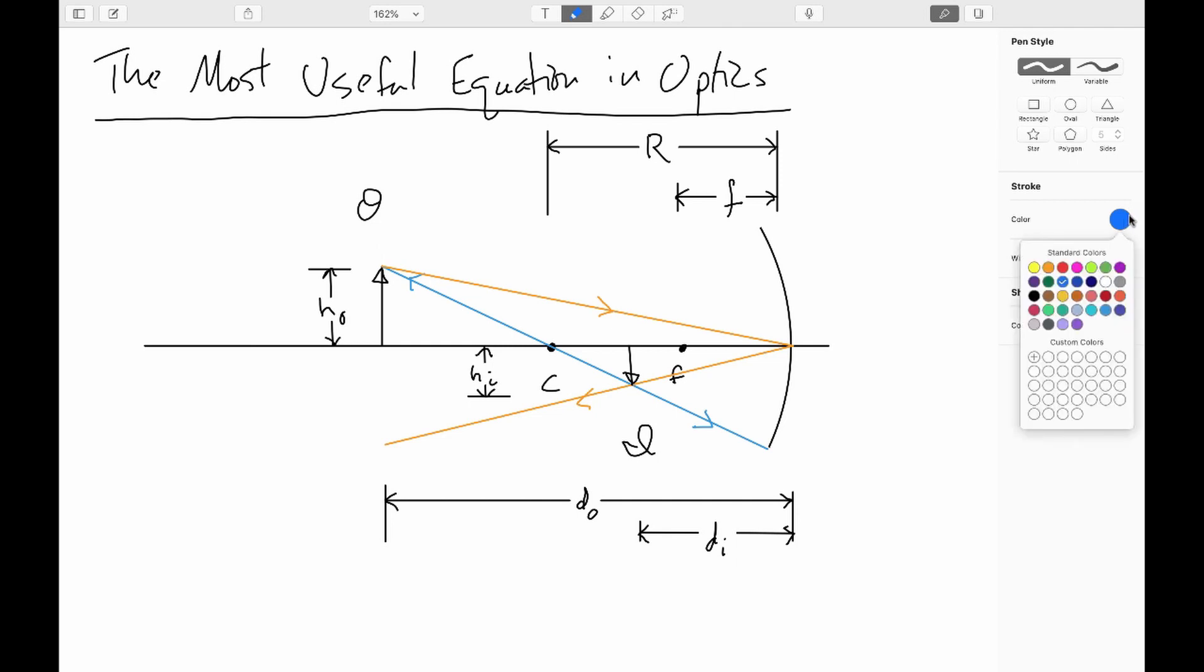Now it turns out that we can set up a proportionality between a couple different pairs of triangles. So the first proportionality that I would like to look at is this one here. This triangle here, that I'm highlighting in red, is proportional to this triangle here. They're similar triangles. These included angles have the same angle, right angle, right angle. So they are similar triangles. So this means that the heights here are in proportion. And also this distance here is in proportion to this distance here.